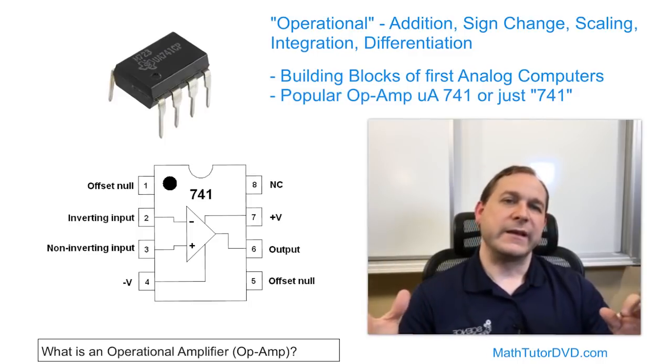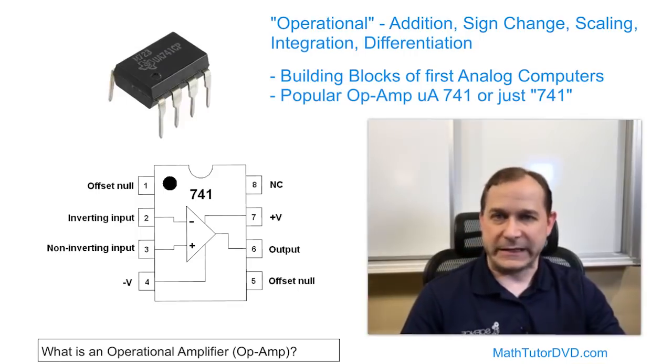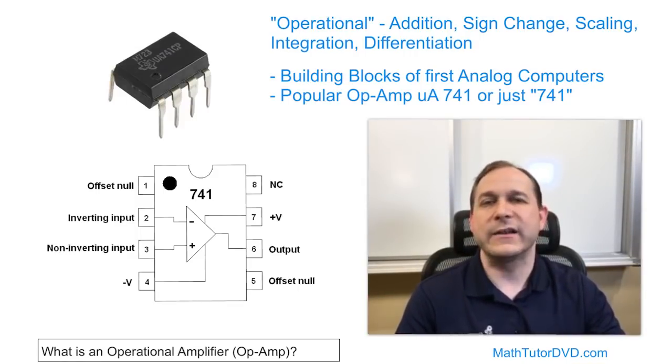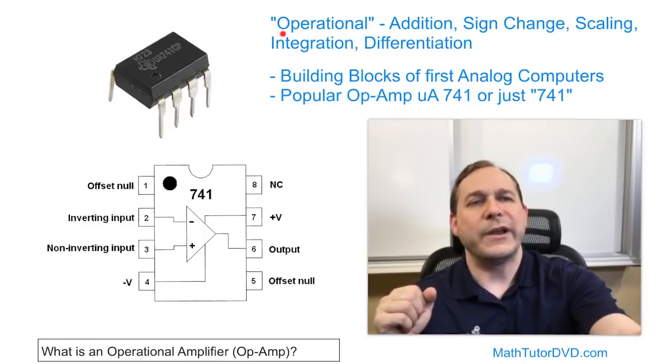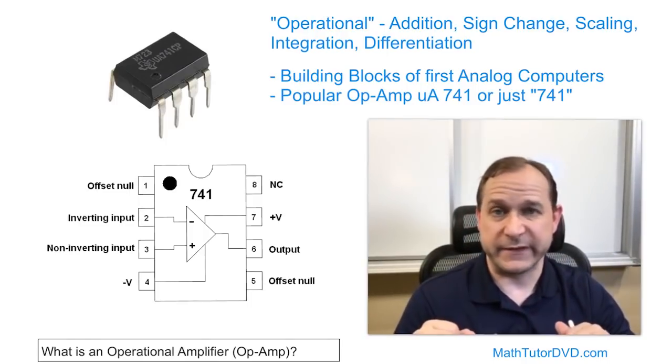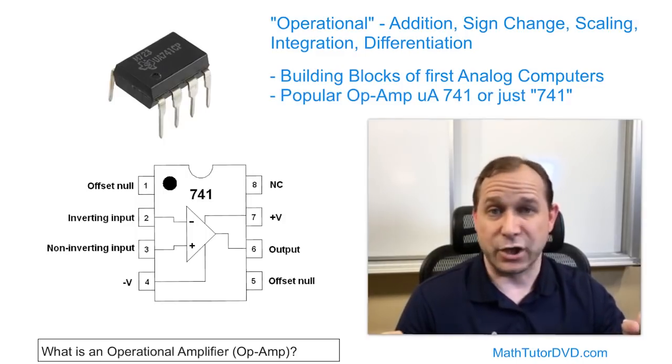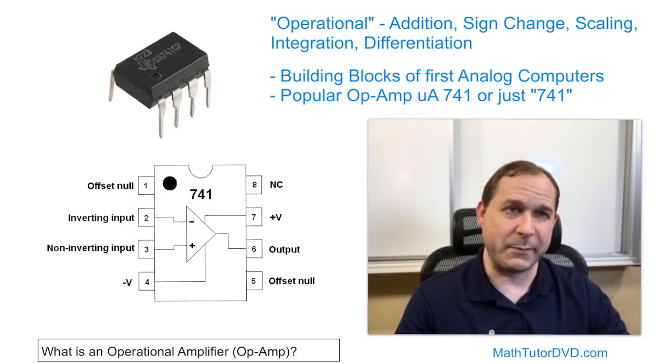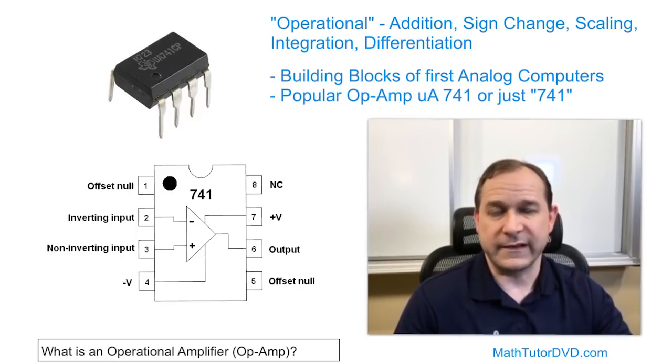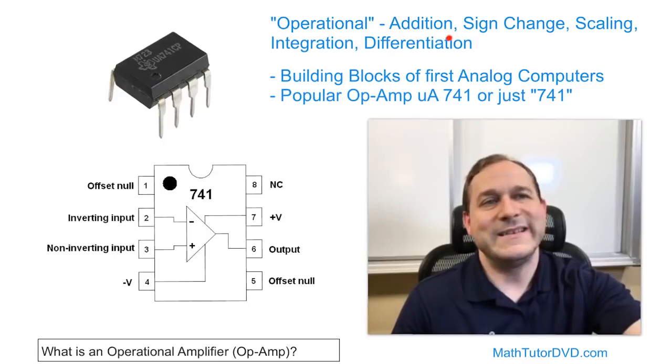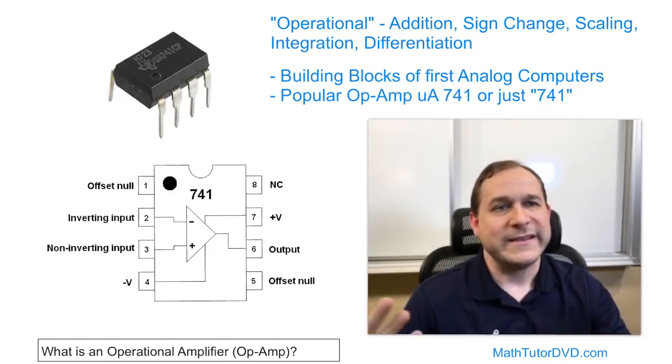So the first thing is, why is it called an operational amplifier? Most of you guys have an idea of what the word amplifier means, but why is it called the operational amplifier? The word operational comes from the history of why this thing was invented. Basically it was one of the first building blocks of analog computers before digital computers came about, and they're called operational because you can actually use these little circuits, these op amp circuits, to perform addition and sign change, reversing the sign of a signal. Scaling, which means to make the signal bigger or smaller.